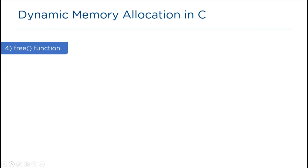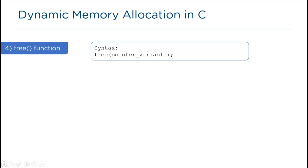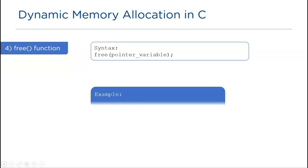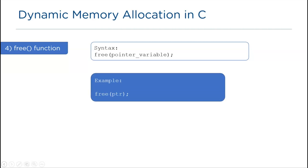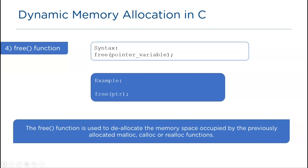Moving ahead, we have the free function. The syntax is simple: we pass the pointer to free, for example free(ptr). The free function is used to deallocate the memory space previously allocated by malloc, calloc, or realloc, in order to use memory more efficiently and to return the memory back to the heap once done. Once we free the memory, other programs can use that block of memory if required.